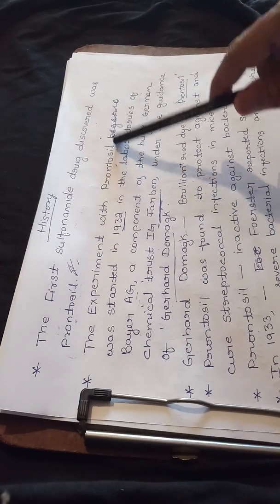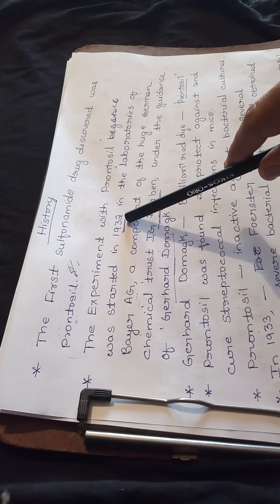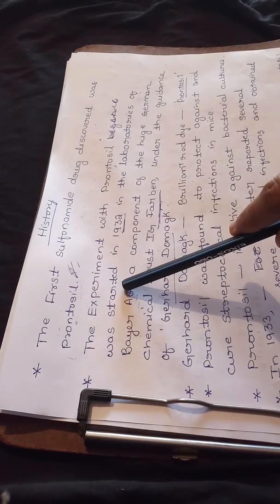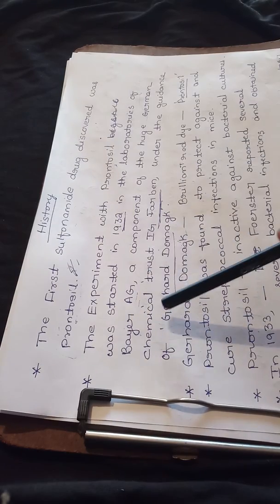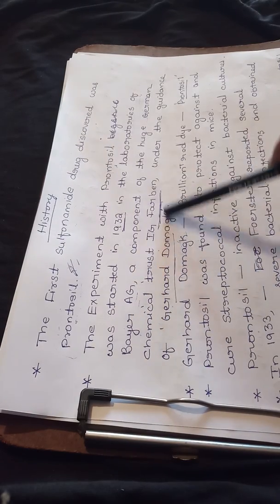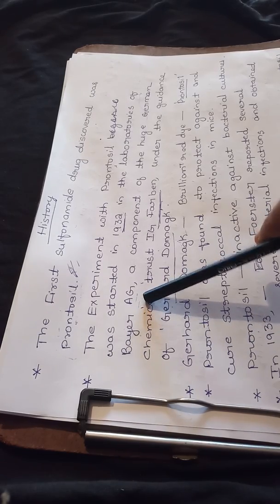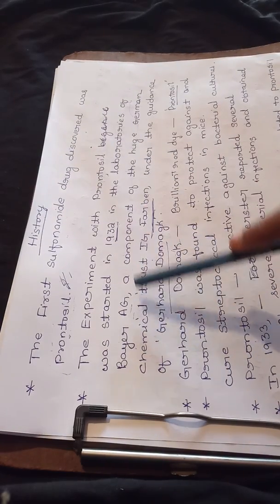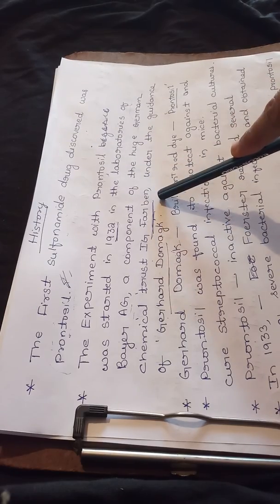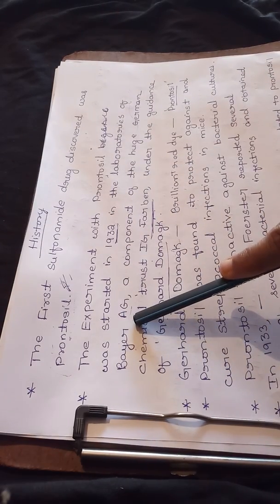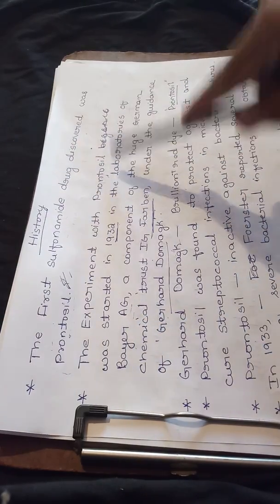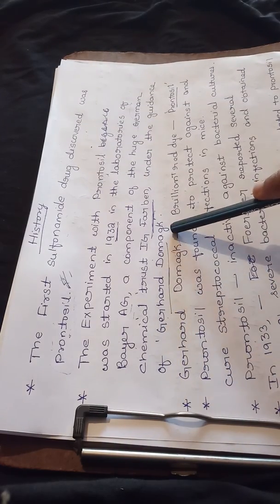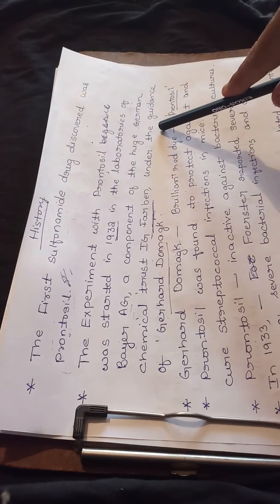Bayer AG was a component of the huge German chemical trust IG Farben, under the guidance of Gerhard Domag. Bayer AG is one pharmaceutical company which was under the very large chemical trust called IG Farben. The work on prontosil was going on under the guidance of Gerhard Domag, who was a popular physician and researcher.